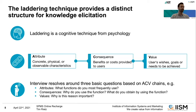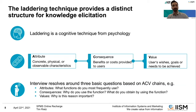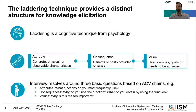Laddering is about understanding why people do what they do — what means motivate them to pursue certain ends. It's a rather common technique used in interviews and in requirements solicitation. The fundamentals are straightforward: it's all about asking why. You ask a question, get a reply, ask why again, and continue on until you reach the underlying value behind the attribute you're eliciting.